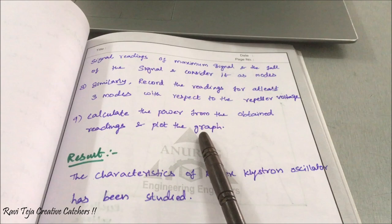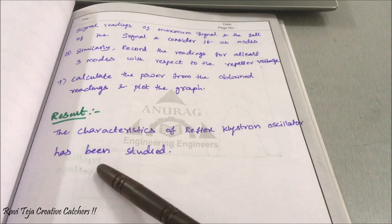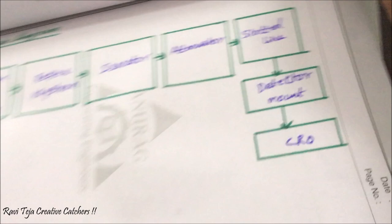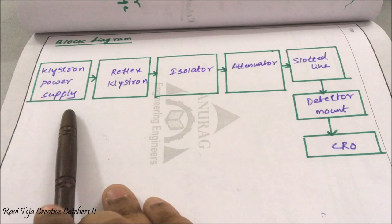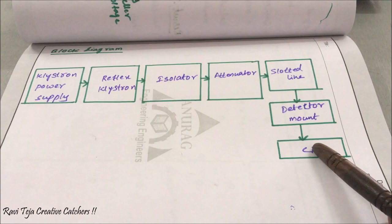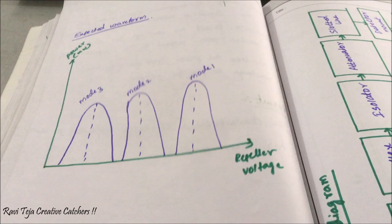From the three modes we will calculate the power and plot the graph. After plotting, we write the result: the characteristics of a reflex klystron oscillator have been studied. The block diagram includes: klystron power supply, reflex klystron, isolator, attenuator, slotted line, detector mount, and CRO.